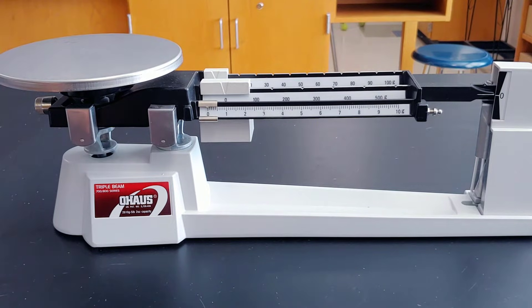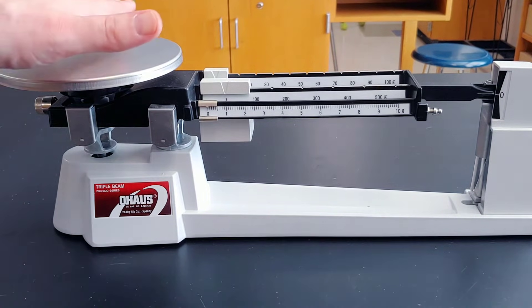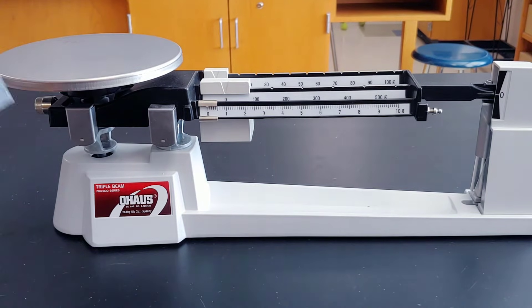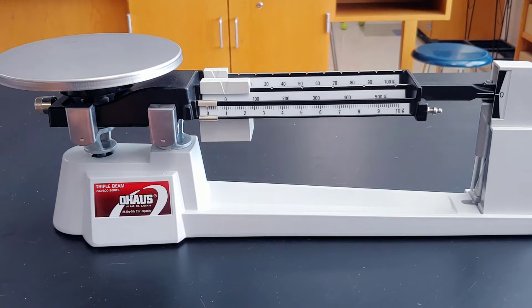First, let's review the parts. This is the pan. This is where we'll be placing our objects that we want to measure the mass of. Make sure you place it in the center of the pan for the most accurate measurements.